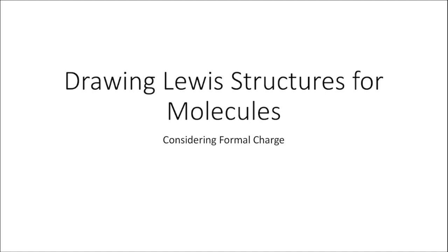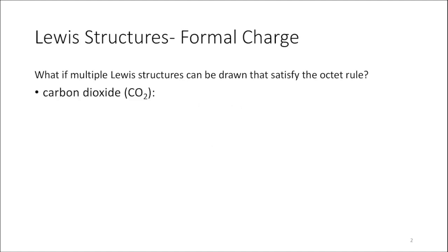Hello and welcome to the Chemistry Solution. In this tutorial we are going to look at drawing Lewis structures from molecules, and we are going to look at specific scenarios where we consider formal charge. Sometimes when you're drawing a Lewis structure there are multiple Lewis structures that can be drawn that satisfy the octet rule, and so I want to look at carbon dioxide right here.